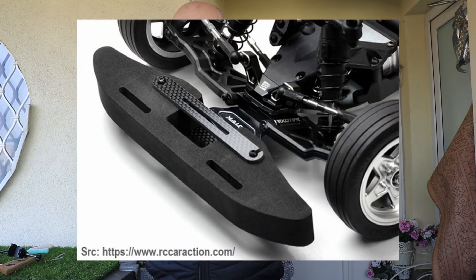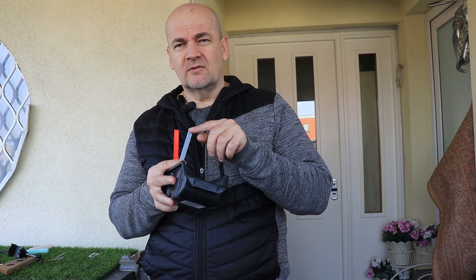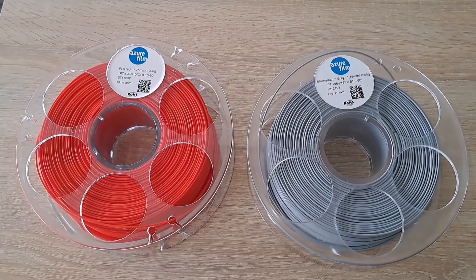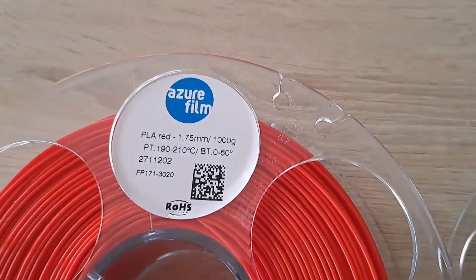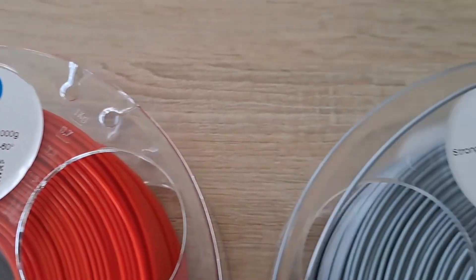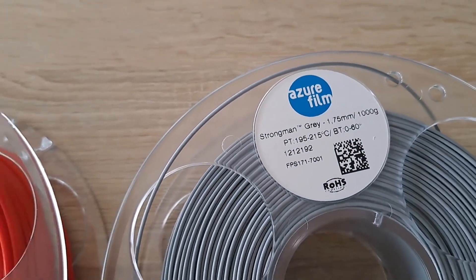Why would I recommend using PLA Strongman instead of regular PLA? You saw from the results, if you're expecting some dynamic load, for example a bumper for an RC car, or maybe the biggest danger for your object is that it will fall down and break, in that case definitely the Strongman is better compared to PLA. But in all other applications with mechanical loads, regular PLA is better compared to Strongman.